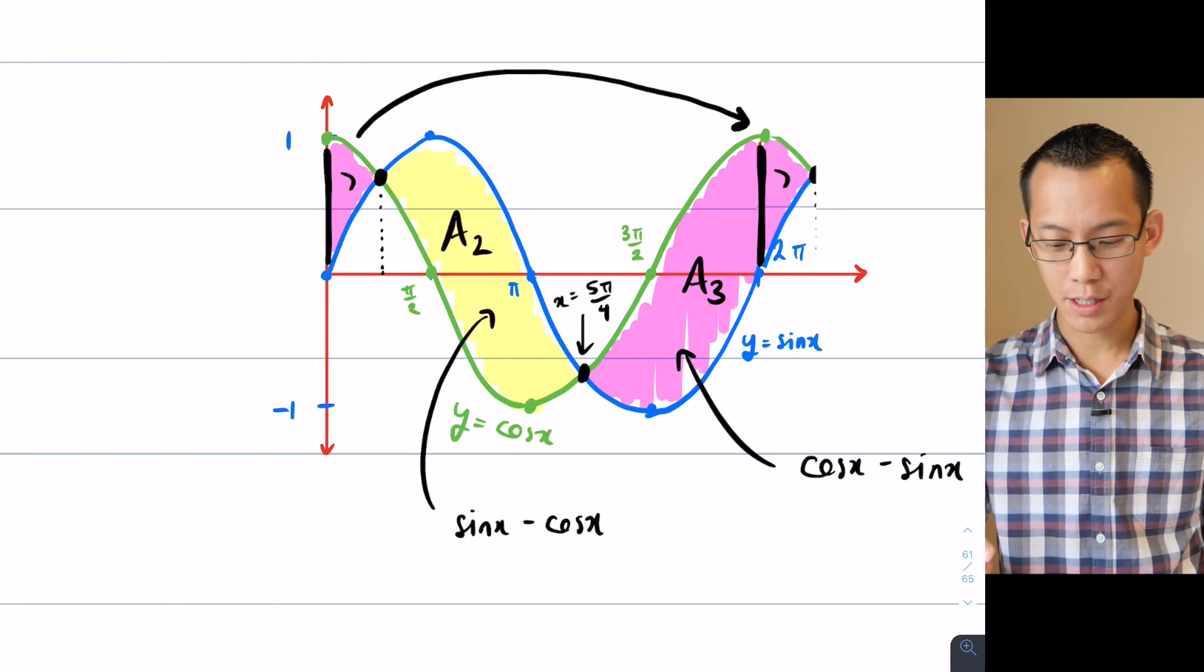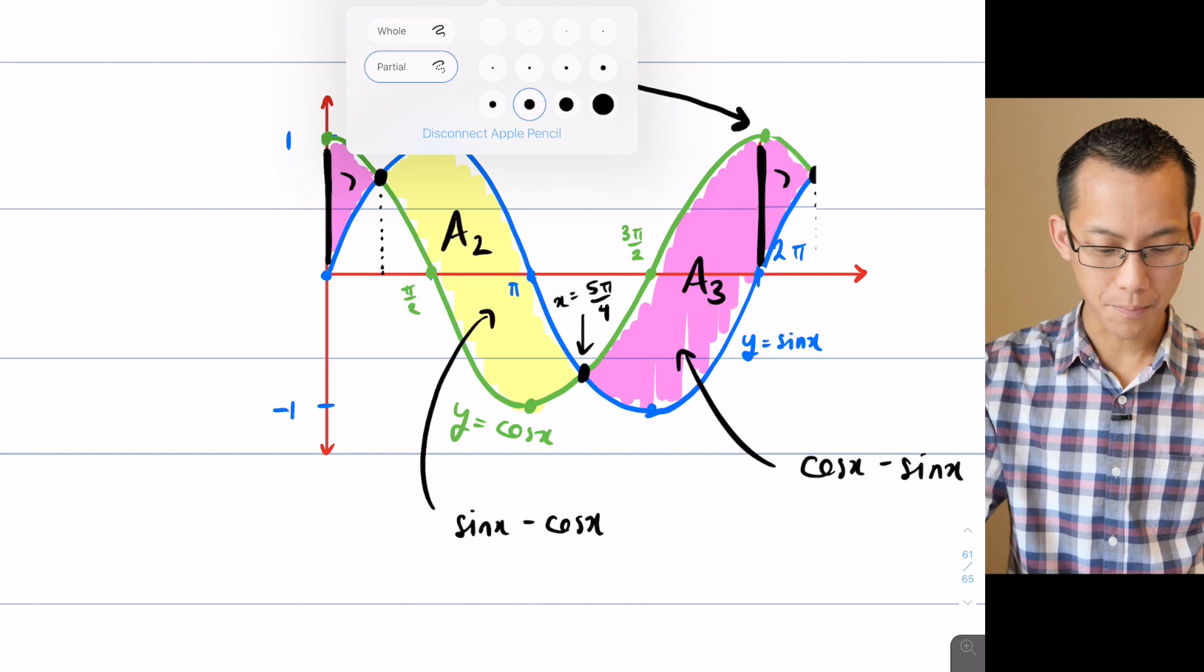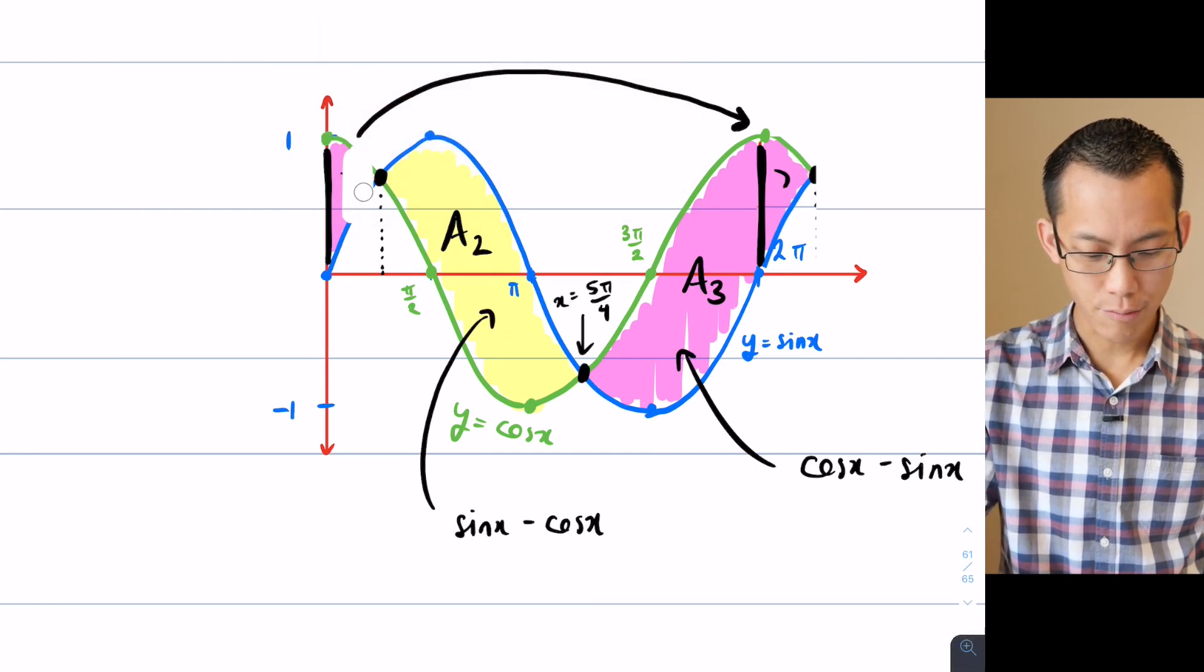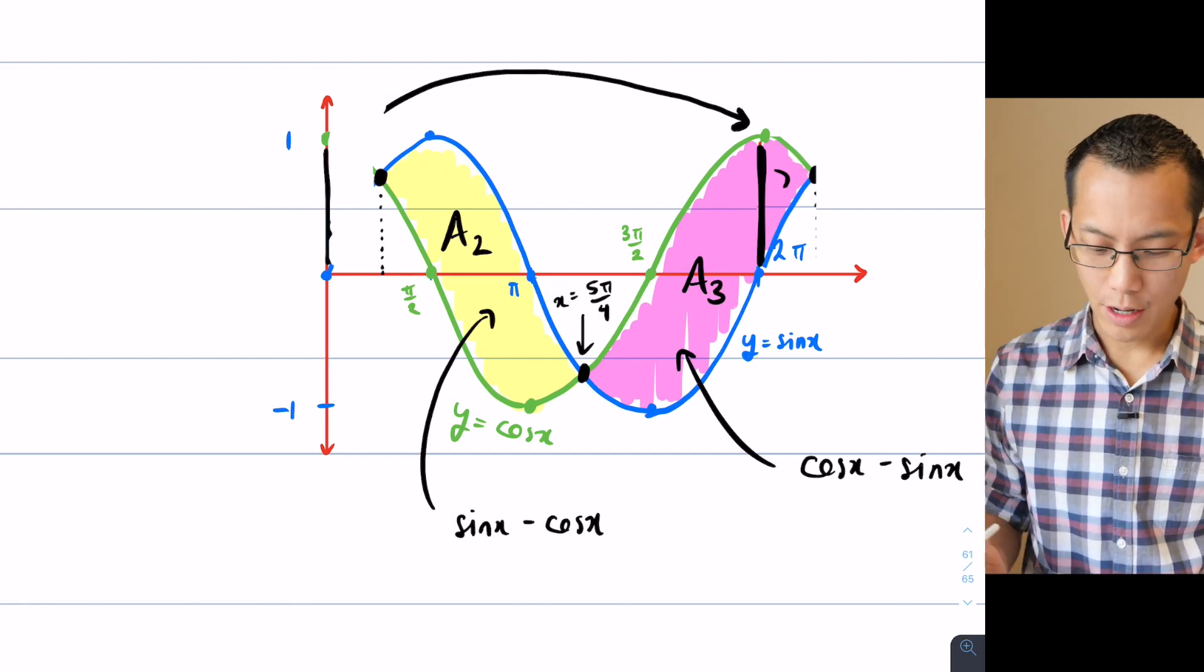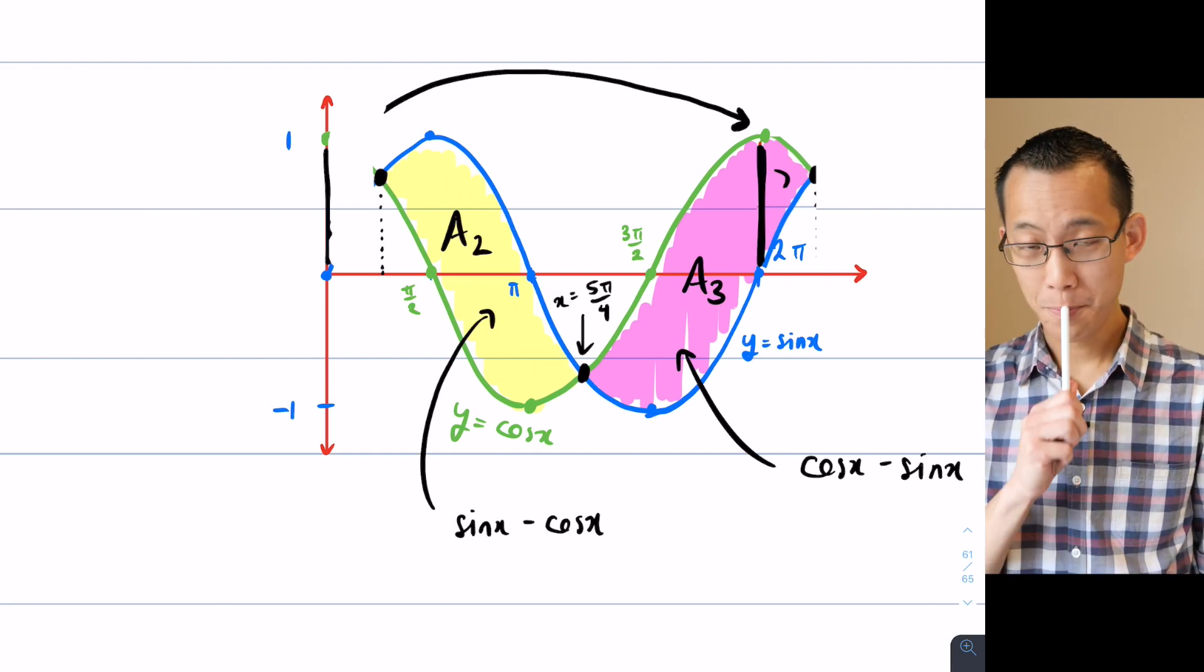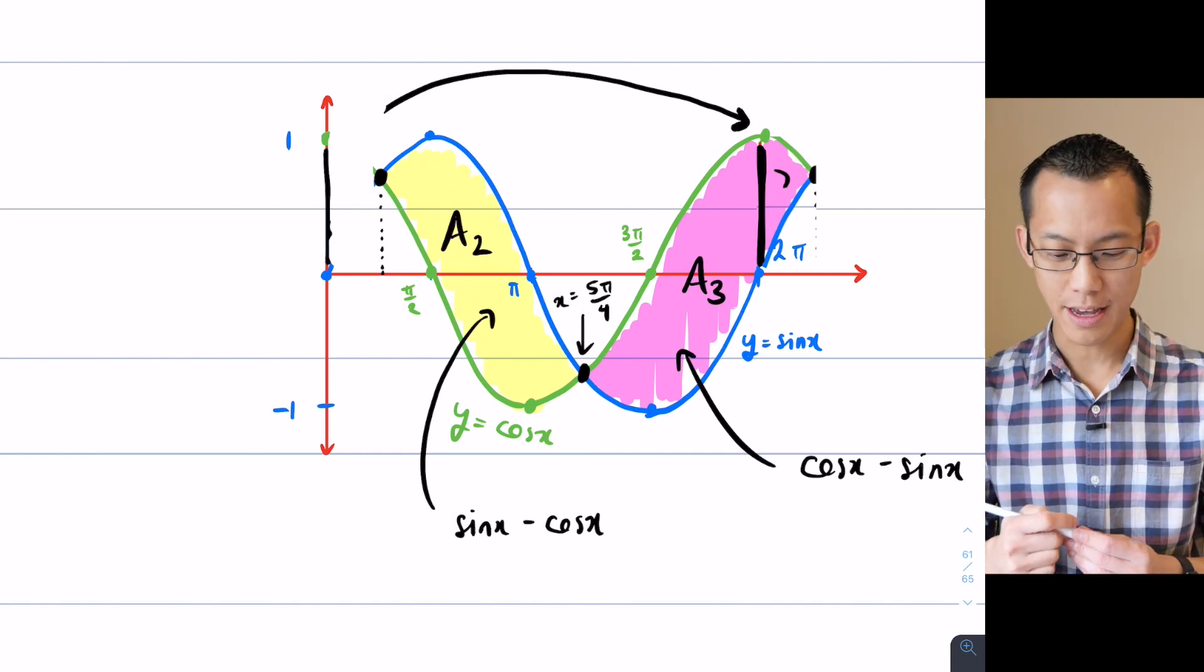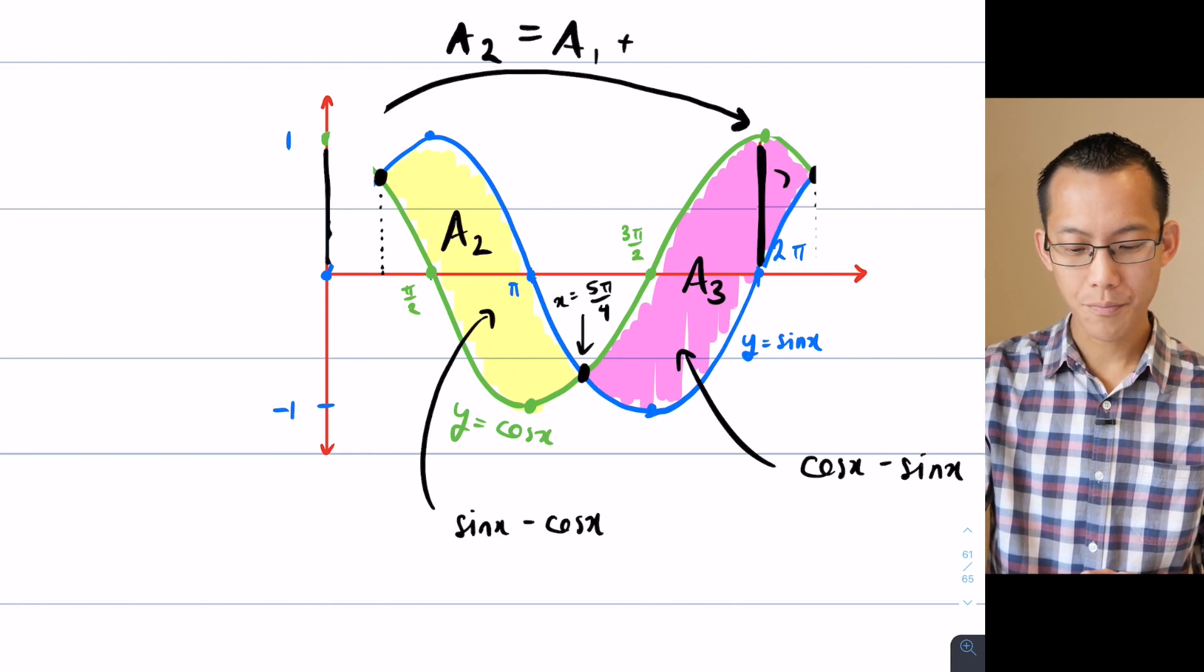Now when you look at this combined A₃ plus A₁, the pink area, what have I got here? A₂, the yellow area, and A₁ plus A₃, which is the pink area, they look suspiciously alike. In fact, they're not suspiciously alike, they are exactly equal to each other, but there's a horizontal reflection that's happened there. So in fact, I can say that A₂ is exactly equal to A₁ plus A₃.